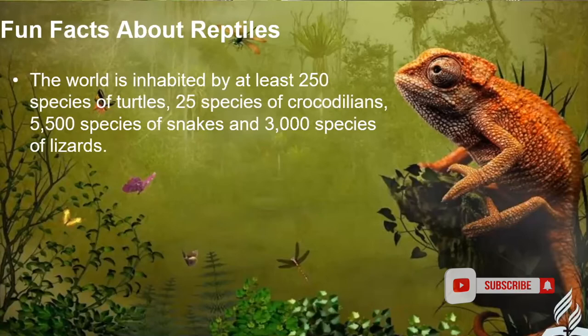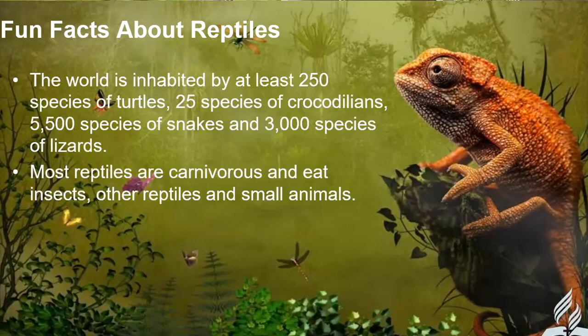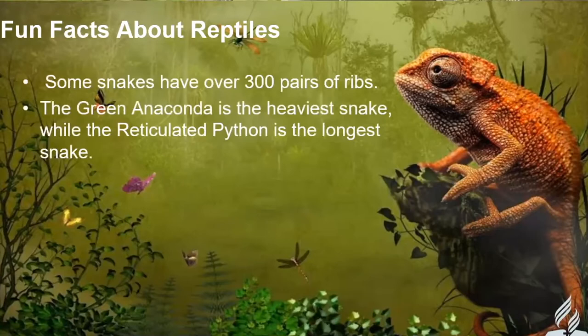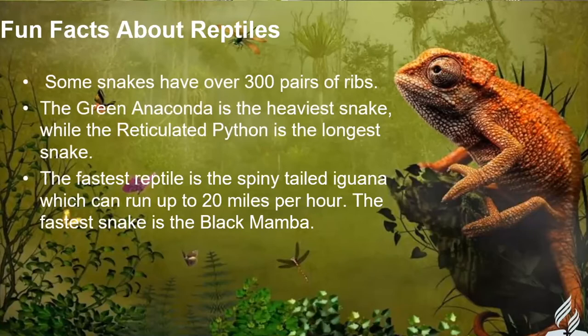The world is inhabited by at least 250 species of turtles, 25 species of crocodiles, 2,500 species of snakes, and 3,000 species of lizards — imagine that! Most reptiles are carnivorous, meaning they eat meat — insects, other reptiles, and other animals. Reptiles eat 30 to 50 times less food than birds and mammals. Some snakes have over 300 pairs of ribs. The green anaconda is the heaviest snake while the reticulated python is the longest.